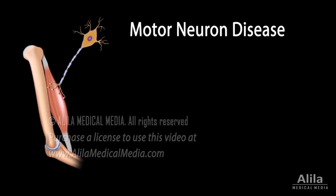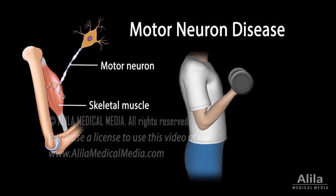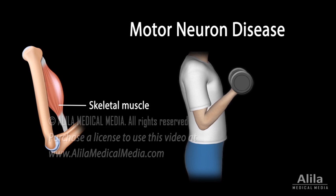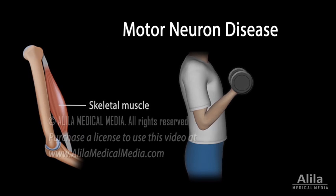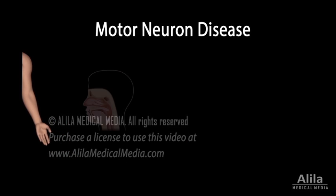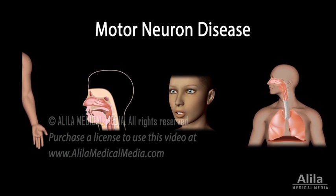Motor neuron disease is not one but a group of rare neurological conditions in which motor neurons, the nerve cells that control skeletal muscle movement, are progressively degenerated. Loss of motor neurons results in muscle weakness that gradually worsens over time, impairing the body's ability to move, eat, speak, or even breathe.